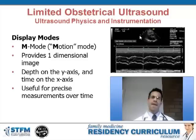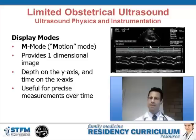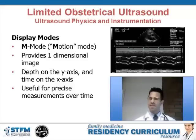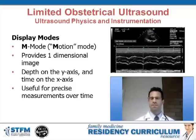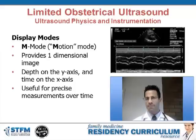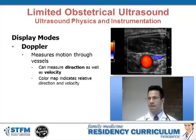Here you can see a parasternal long axis view of the heart — this is the 2D image, and here is the M mode image. M mode takes only one line straight down through the heart; the y-axis represents depth and the x-axis is time. At the aortic valve, it shows the opening and closing of valves in relationship to time. M mode is particularly good for obstetric imaging when calculating the fetal heart rate, and for measuring heart valves precisely in relation to time in cardiac imaging.